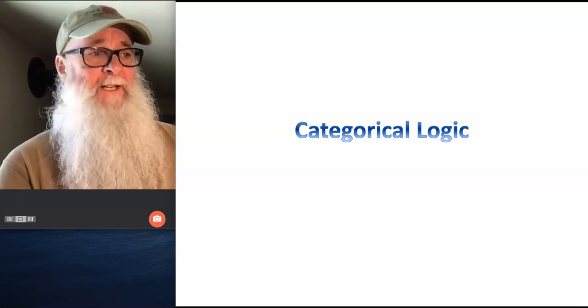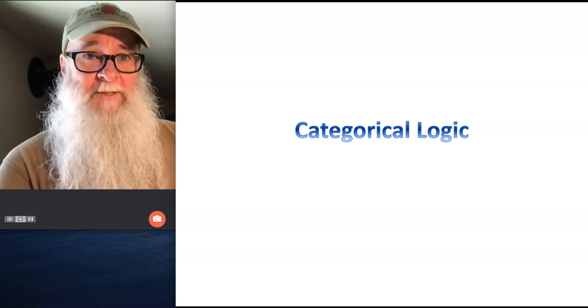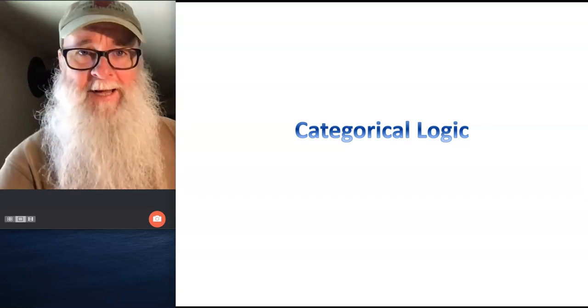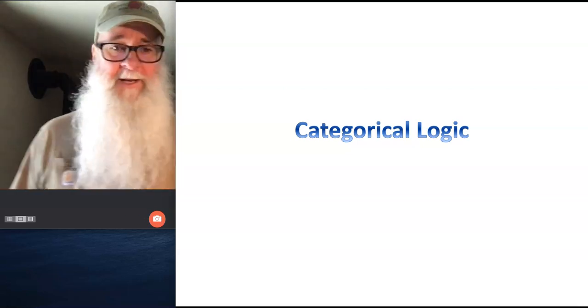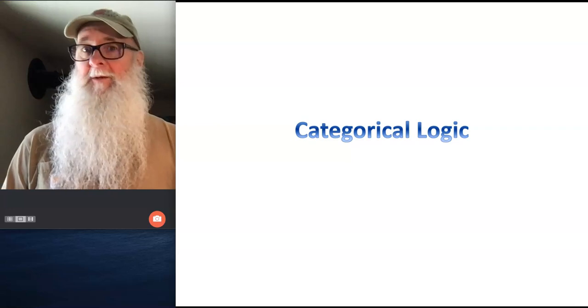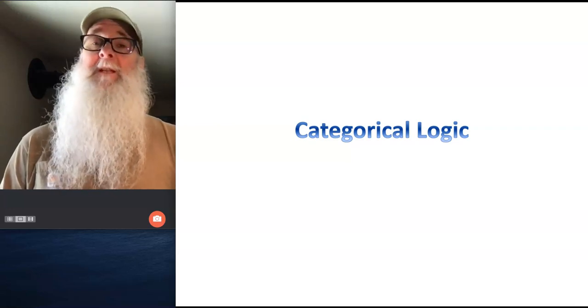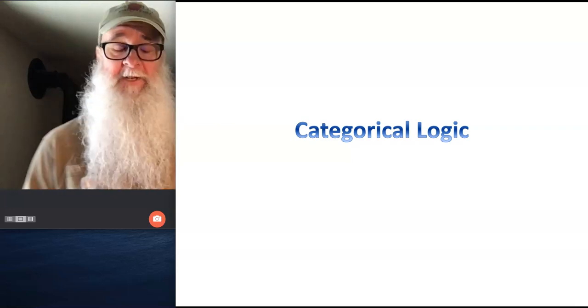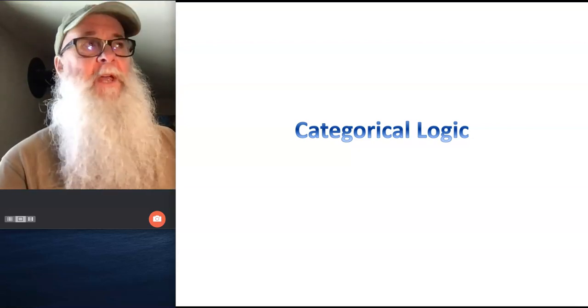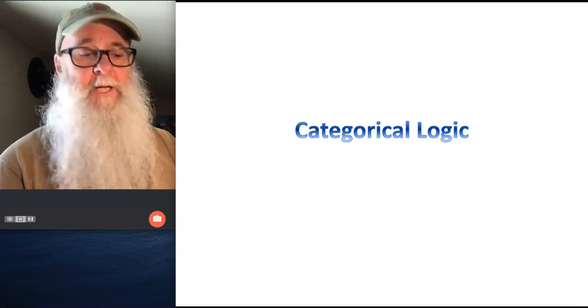This is a system for thinking created by the philosopher Aristotle after he studied for 20 years under Plato back in ancient Greece some 2,300 years ago. It's a really old system for thinking, but I think you're going to see that it remains a really powerful system for thinking. And you're probably going to see that we wouldn't be able to do things like science without a system of categorical logic.